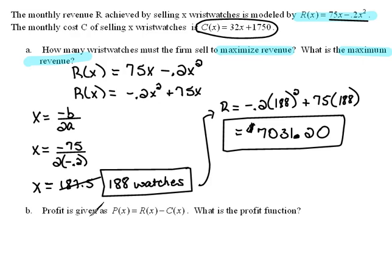They say profit is given as P(x) equals R(x) minus C(x). This means profit is equal to the revenue minus the cost. So they're asking us to find the profit function. Well, up here they gave us the revenue function and the cost function to begin with. So really all we have to do is plug it in here.